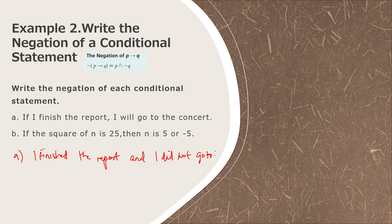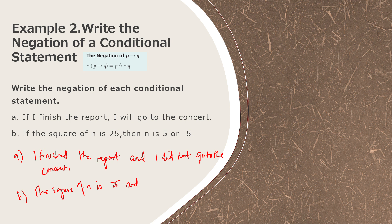Letter b: 'If the square of n is 25, then n is 5 or negative 5.' The negation is: the square of n is 25 AND n is not 5 or negative 5.